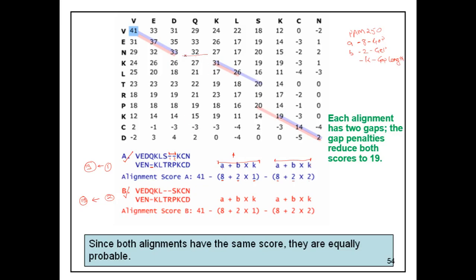Now you know where to place the gap, what might be the optimal position to place the gap, and what should be the length of the gap. The traceback procedure gives you the exact idea of these things. In this way, you align the two sequences using the global alignment algorithm called dynamic programming, specifically the Needleman-Wunsch algorithm.